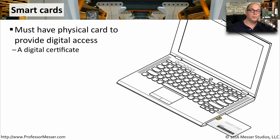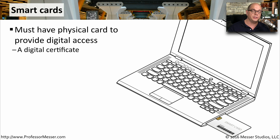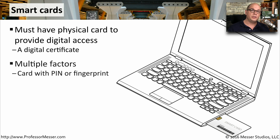One common form of digital security that requires a physical object is a smart card. The smart card usually contains a digital certificate, and we usually insert it into a laptop or smart card reader for authentication. We're often using the smart card with some other factor of authentication, so we might add a username, a password, a personal identification number, and then also use the smart card.